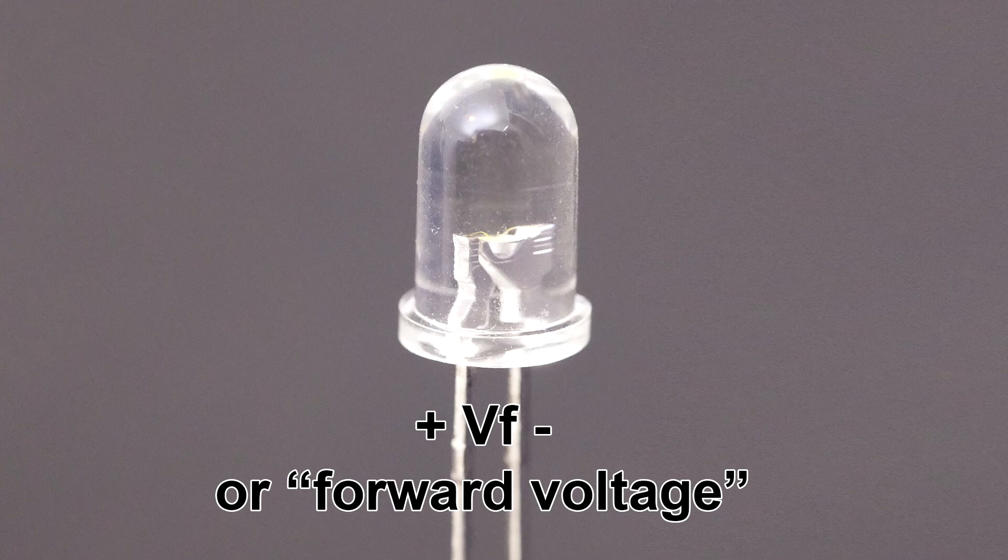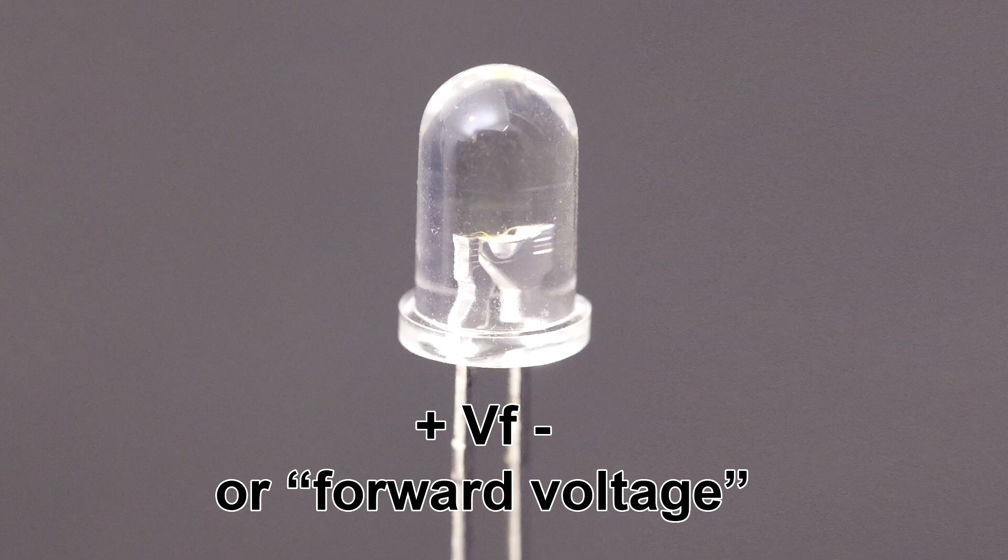Now let's talk about the forward voltage of an LED. All LEDs need a certain voltage across them, in the right direction, before any current can flow and they start emitting light. This particular white LED I'm using has a forward voltage of 3 volts, so we need around 3 volts before it can do anything interesting.